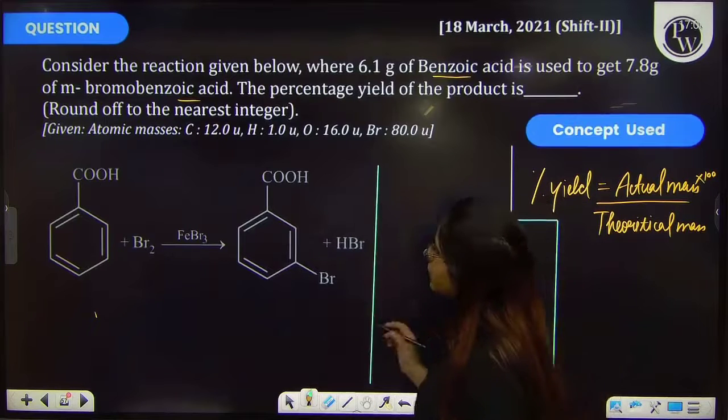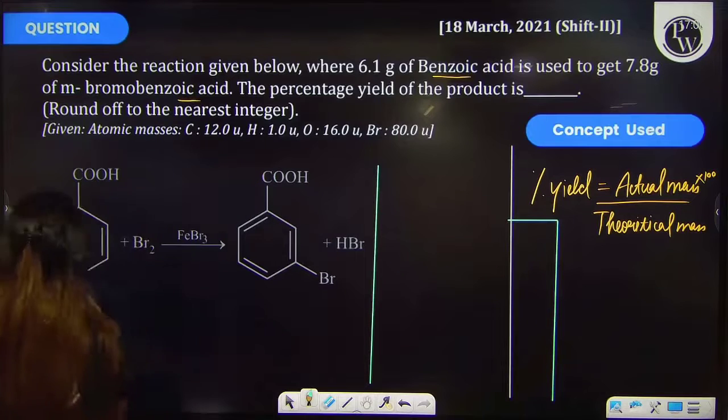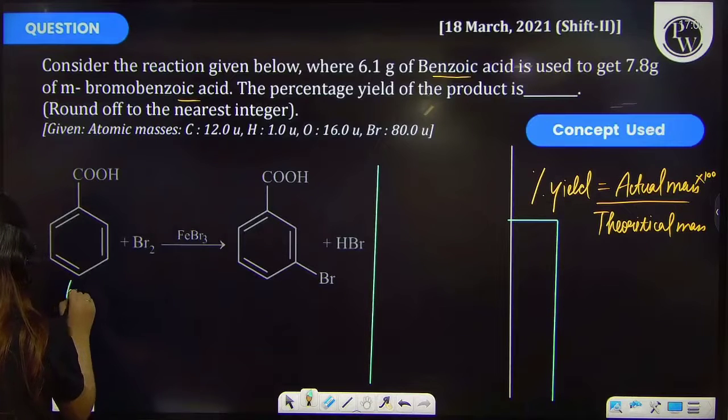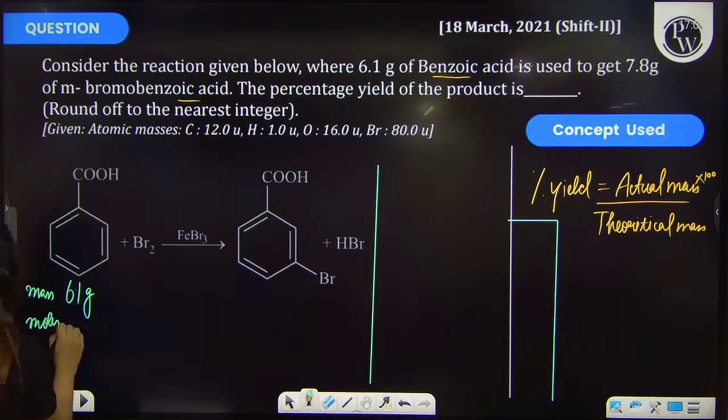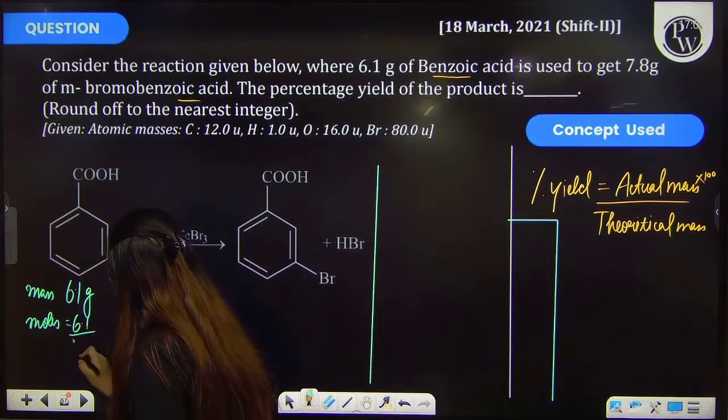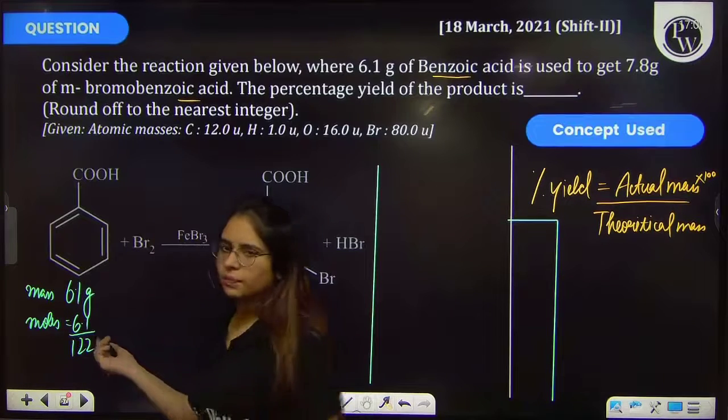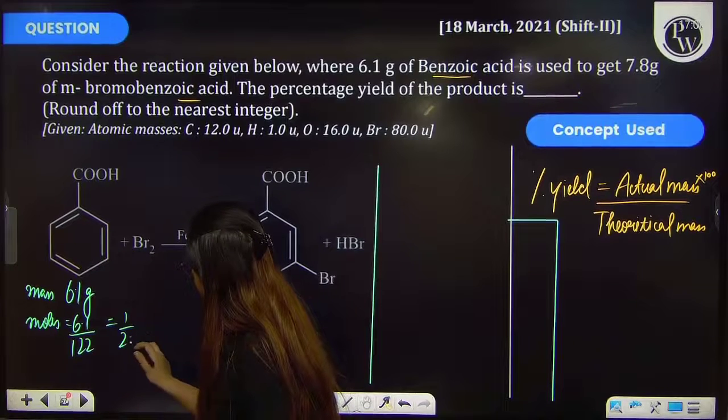First of all, we have been provided with the mass of benzoic acid, that is 6.1 g. This is the mass. And for calculating the moles, we have to divide by the molar mass. That means 6.1 by 122 gram per mole. And on calculating this, you will get 1 by 20 moles.